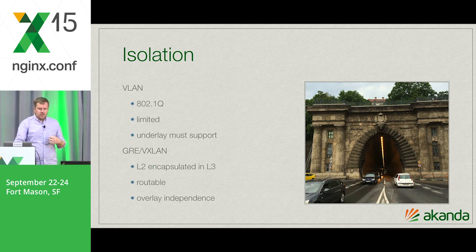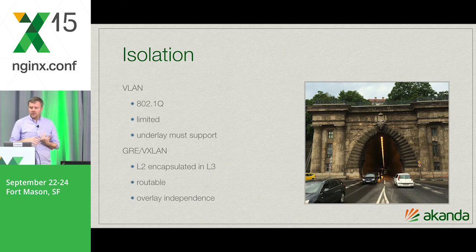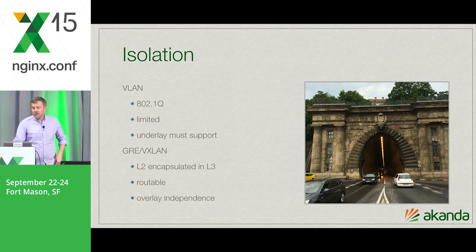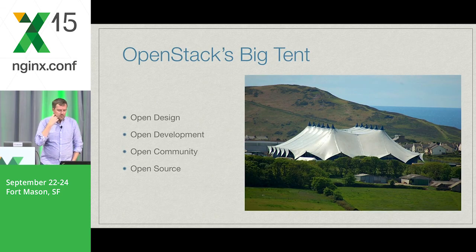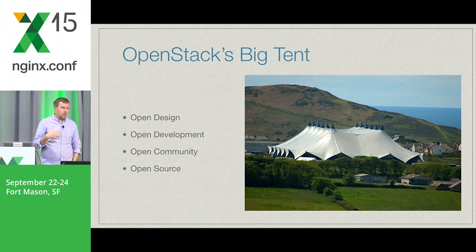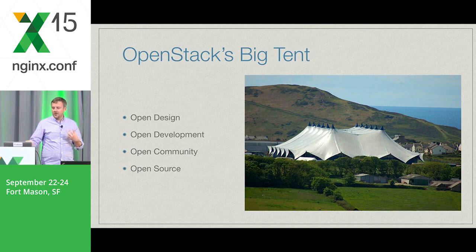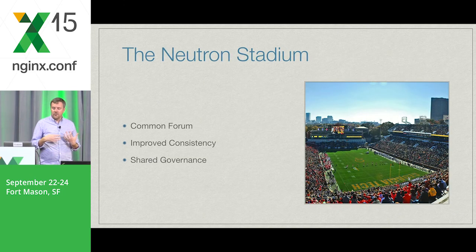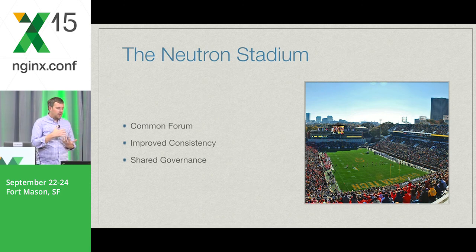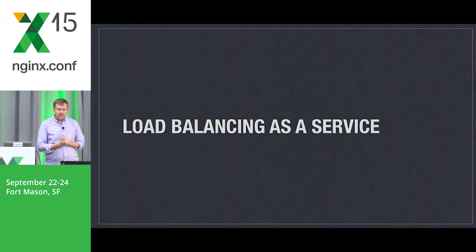That's kind of the basics of what Neutron is. Neutron itself is just networks, ports, and subnets — not a whole lot of interesting things on its own. When we're deploying applications, we need the network to support it with on-demand provisioning. Part of that within OpenStack is what's known as the Big Tent — the ability to spawn up projects as long as those projects support open design, open development, and open community. Within that there's a sub-area nicknamed the Neutron Stadium, which provides a common forum, improved consistency, and shared governance. One of the projects spun up there was load balancing as a service.